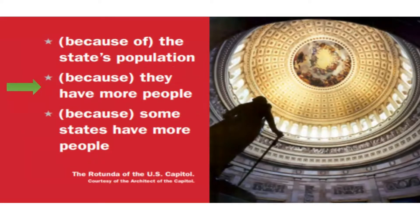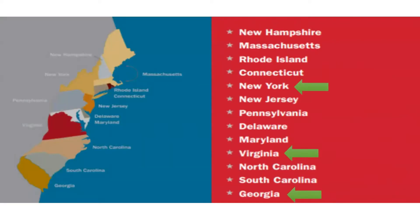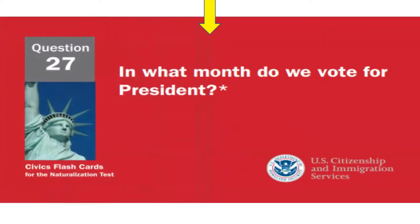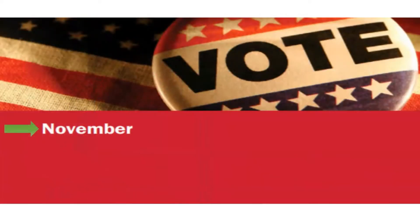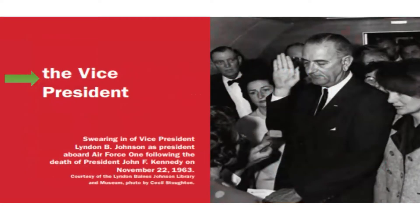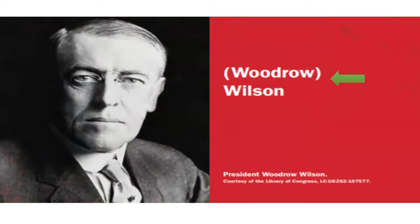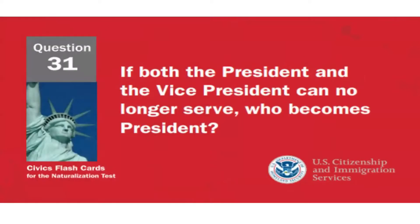Why do some states have more representatives than other states? Because they have more people. There were 13 original states — name three. New York, Virginia, and Georgia. In what month do we vote for president? In November. If the president can no longer serve, who becomes president? The vice president.